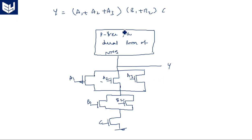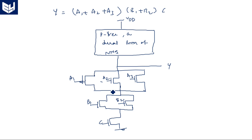For the PMOS structure connected between VDD and the output: A1, A2, A3 must be in series; B1, B2 must be in series; and C with all these three groups is connected in parallel. Thank you.